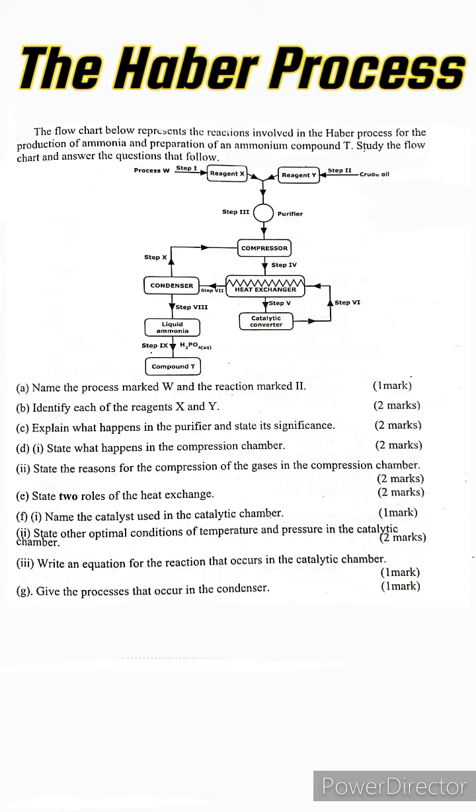Part a: Name the process marked W and the reaction marked... If you look at the flowchart, you'll note that there are two reagents labeled X and Y. Now the only two raw materials for the Haber Process are nitrogen and hydrogen, so it's up to us to determine which is nitrogen and which is hydrogen. The question is asking us to identify the process marked W.